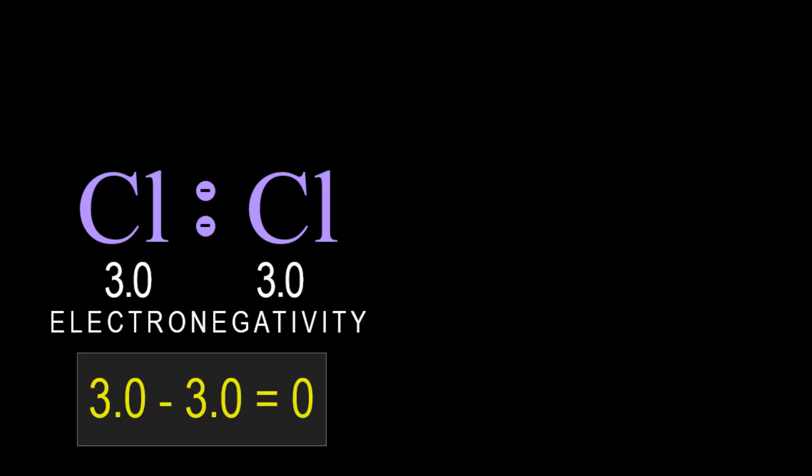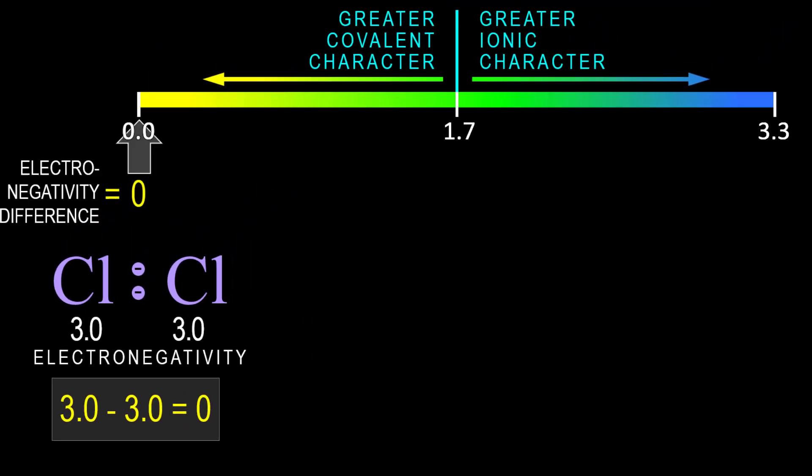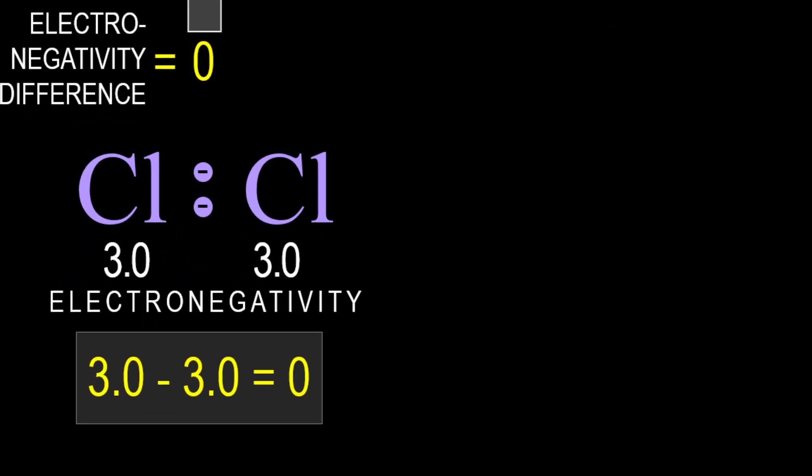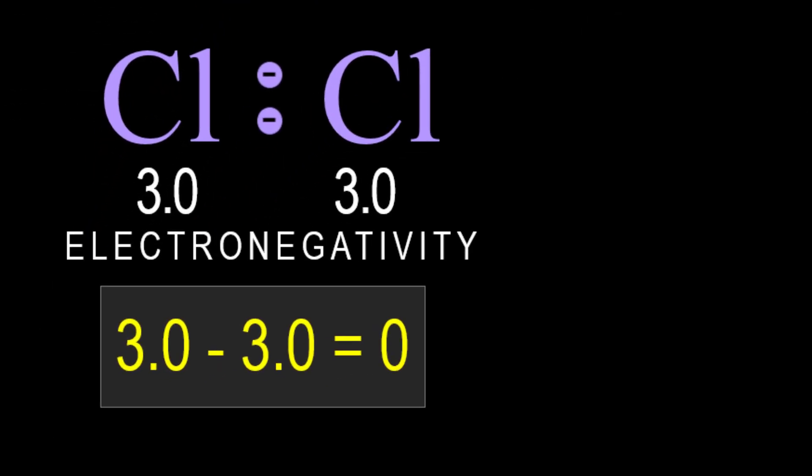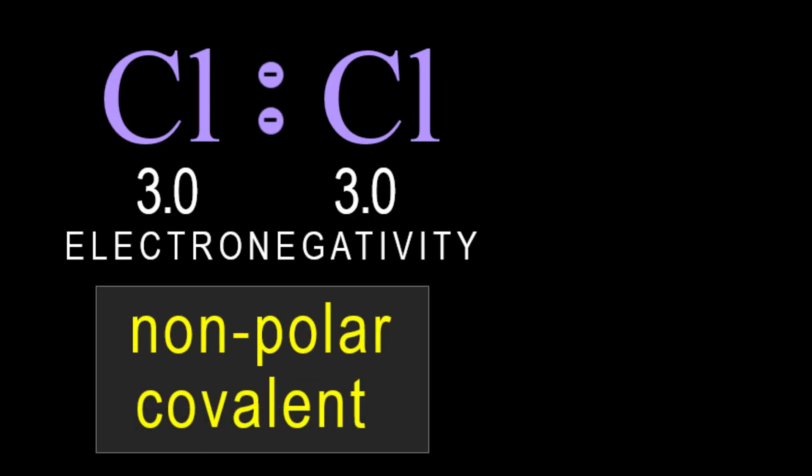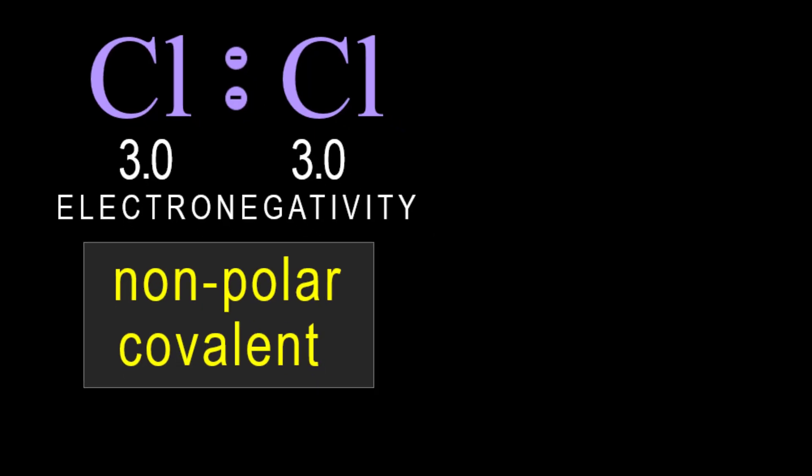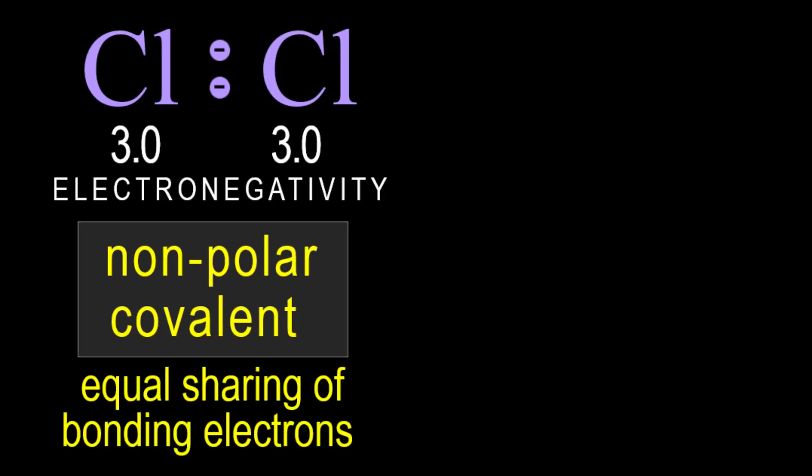We will also use the element symbols because each element has a specific electronegativity. Since these are both chlorine atoms, they have the same electronegativity being 3.0, and so the electronegativity difference is 0, 3 minus 3. Each atom is attracting the shared electrons equally, and so we call this a nonpolar covalent bond, meaning an equal sharing of bonding electrons.